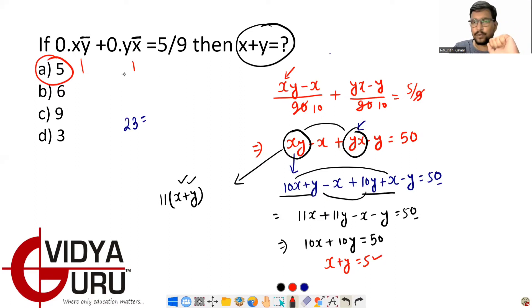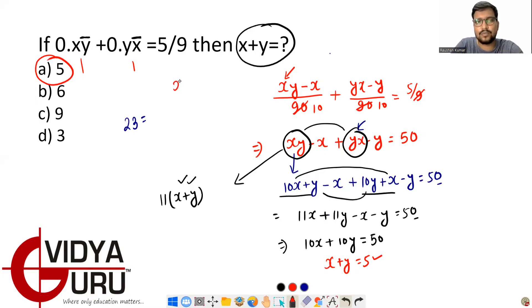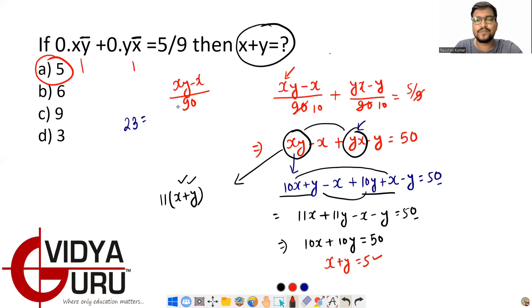Remember: the bar-type question 0.xȳ can be written as (xy − x) / 90. This is a key formula for number system questions involving recurring decimals with the bar notation.